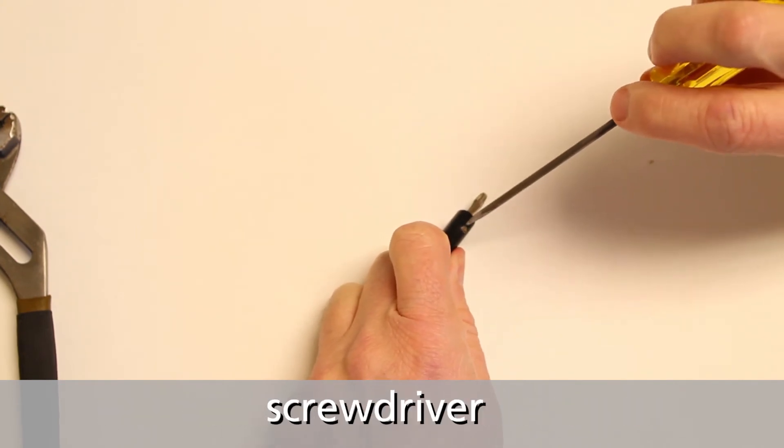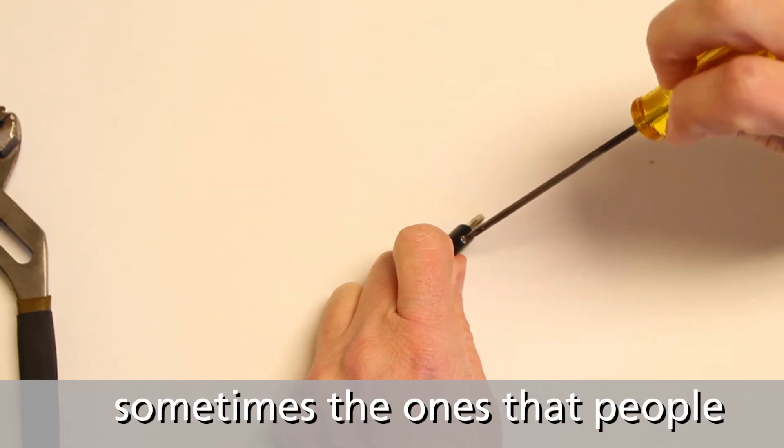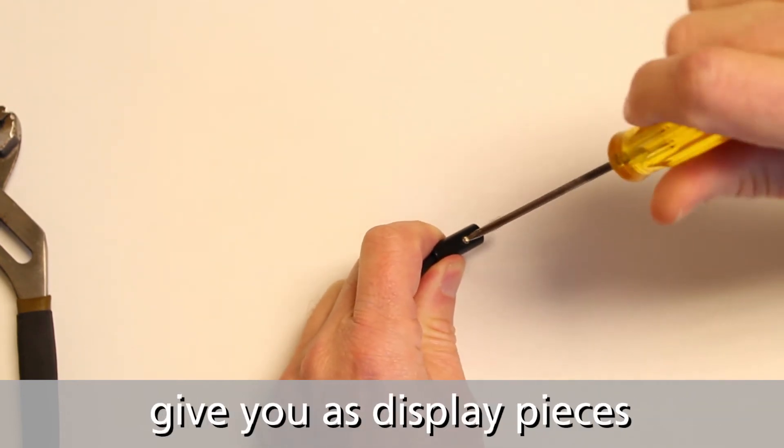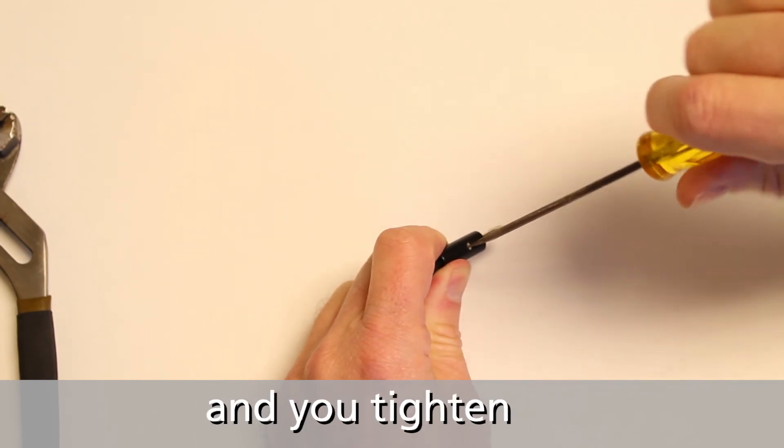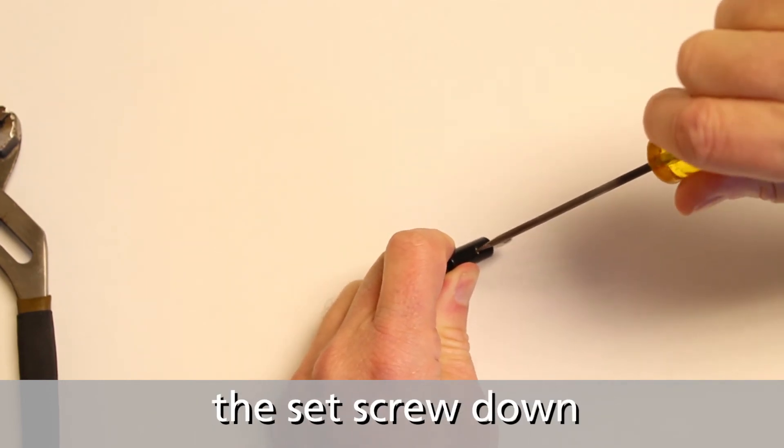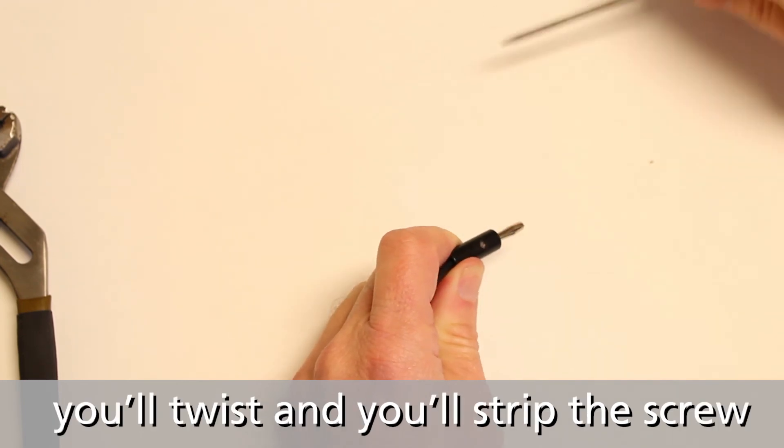Then you literally just take your screwdriver—you have to get one of those small screwdrivers. Sometimes the ones that people give you as display pieces that have their name on it work pretty well. You tighten the set screw down, but don't over tighten it or else you'll twist and strip the screw.